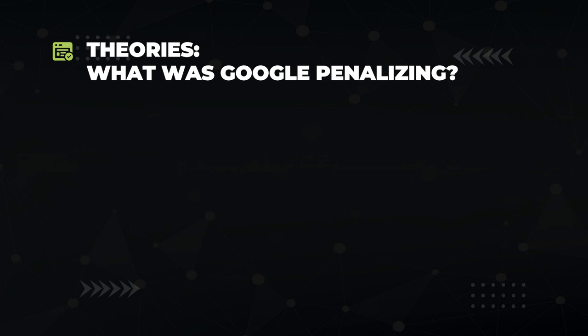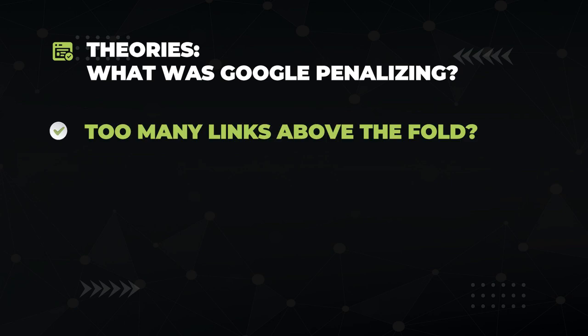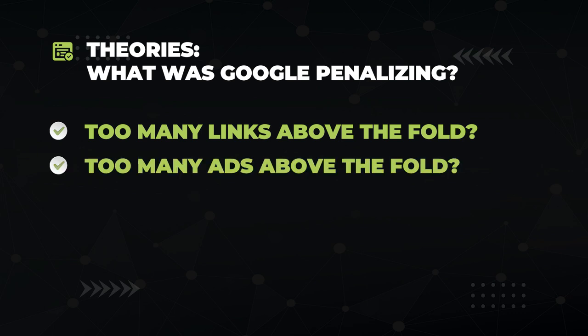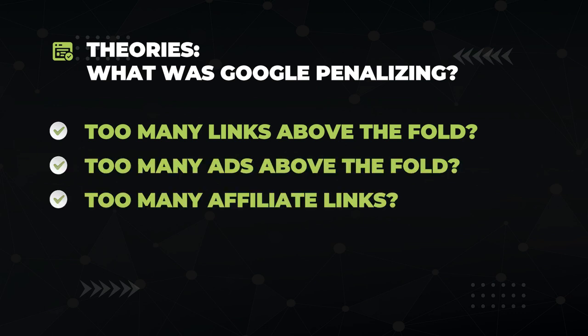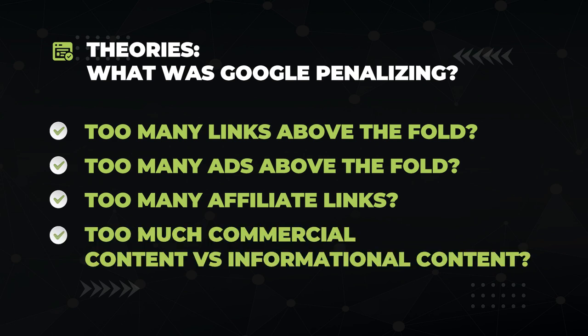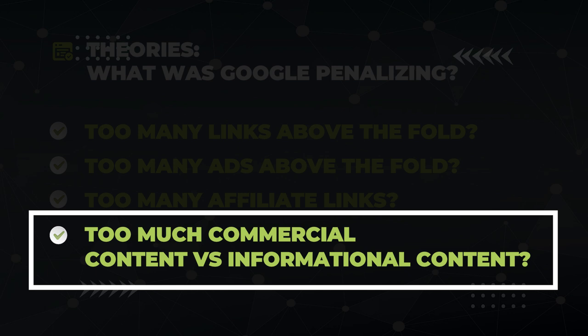But how is Google identifying this? Here's some of the theories we had: maybe Google was looking for affiliate sites that had a lot of affiliate links above the fold, or ads above the fold, or a high proportion of outbound affiliate links versus normal links, or maybe it was a high proportion of commercial monetized content versus informational content. Of all these factors we crawled and analyzed, it was only the last point that had any correlation. The more commercial content people had in proportion to informational content, the more they got hit.